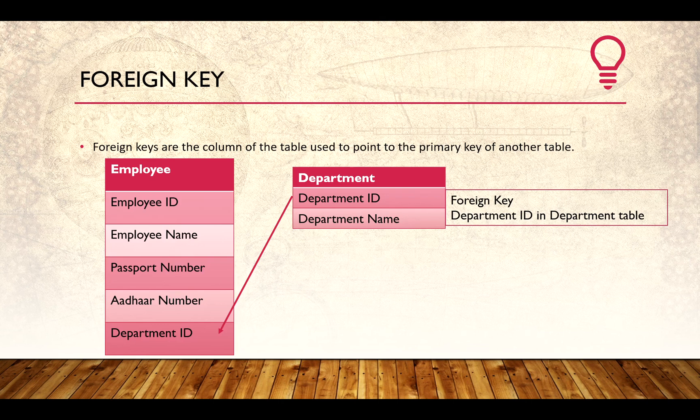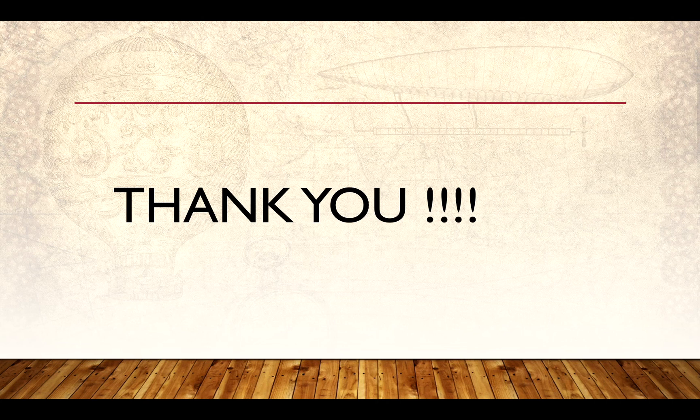The last one is foreign key — I think this is the easiest one. We have a column in our lookup or master table which is identified as a primary key, and that column references the fact table. So, the department ID in the department table is called a foreign key. Thank you, and that's all for today's lesson.